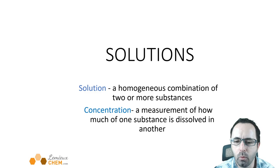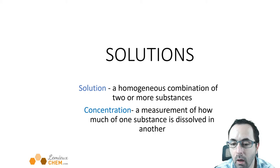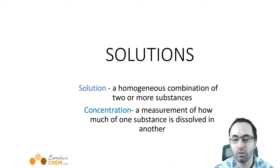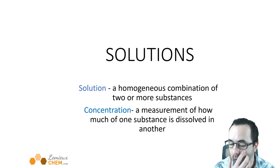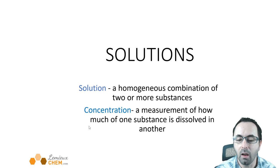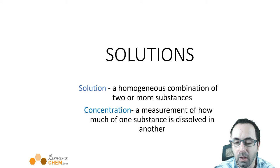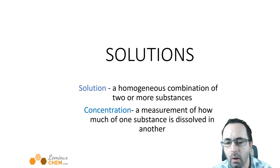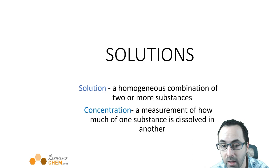Hi, Chem 101 students, and welcome back for our week 13 lecture on solutions. Solutions are a homogeneous combination of two or more substances. We'll talk about non-homogeneous mixtures in the next lecture, but right now we're going to talk about homogeneous mixtures of two components. This is called a solution, and what's important when considering a solution is the concentration — meaning how much of one substance is dissolved in the other.